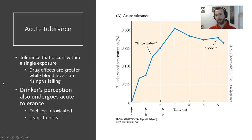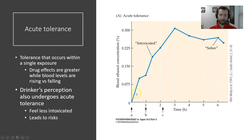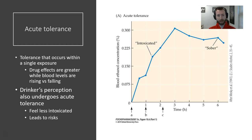First off, let's start by talking about acute tolerance. Acute tolerance is basically tolerance that occurs over the course of a single exposure. Alcohol does undergo acute tolerance. As you can see on the graph on the right, drug exposure effects are greater when blood levels are rising versus falling. This is a graph of blood ethanol concentration — BAC over time — showing when alcohol levels are rising and when they start to fall.